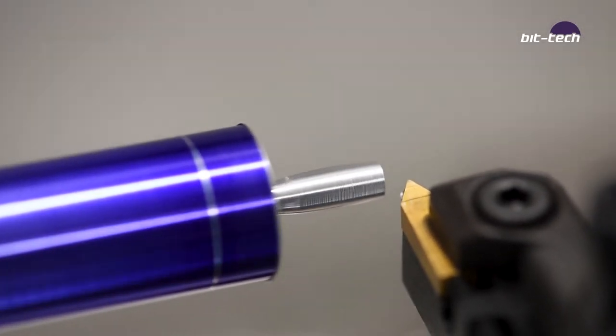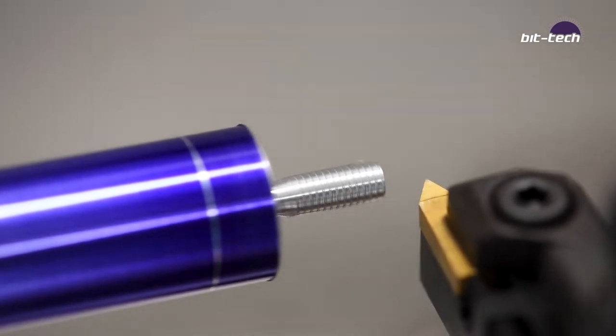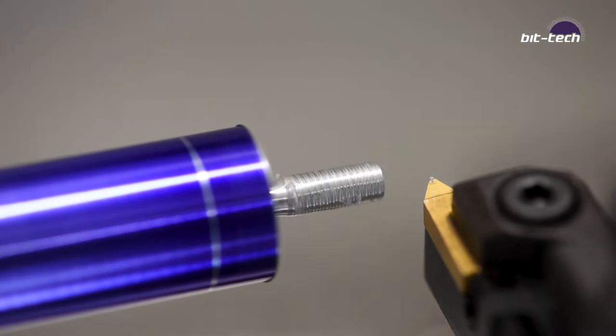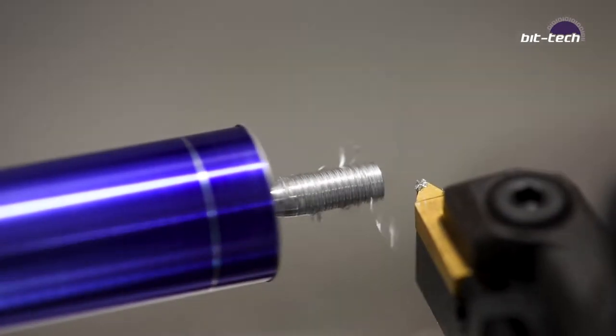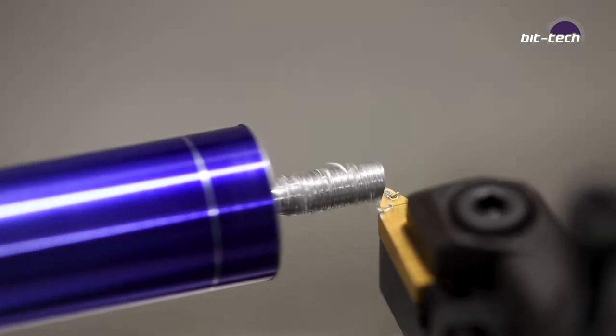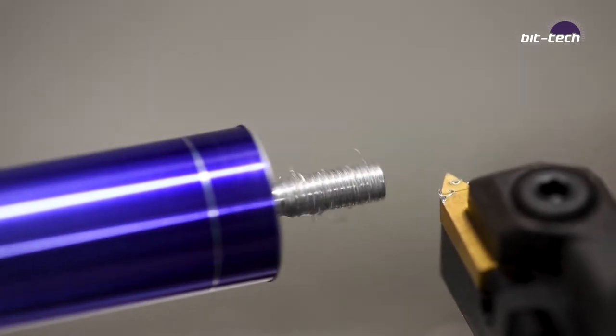I'm cutting an M4 thread with a 0.7 millimeter pitch into this bar. It's worth mentioning that whilst I'm using aluminum it's really not a very good material for this. I'd much prefer to use mild steel or even a harder steel but the fact is I didn't have anything in stock so I'm using the aluminum.